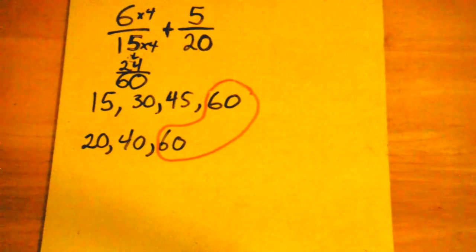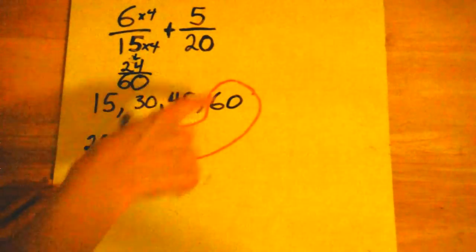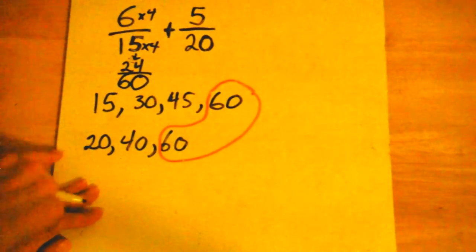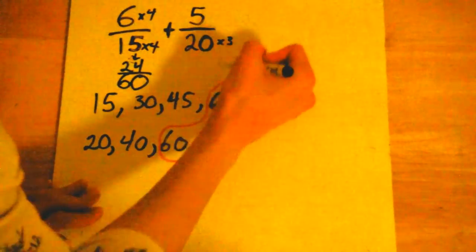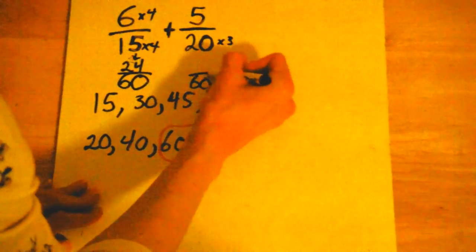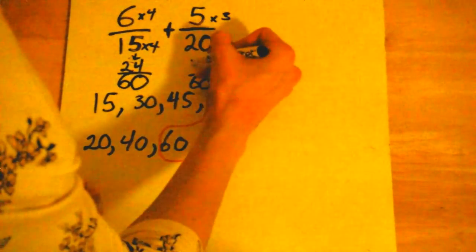Now I'm going to have to create a new fraction with my five-twentieths. So how did I get twenty to sixty? Well, let's see here. One, two, three. So I multiplied twenty times three to get sixty, and I'm going to multiply five by three to get fifteen.